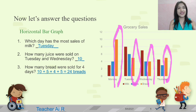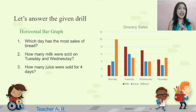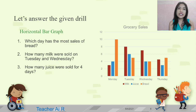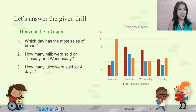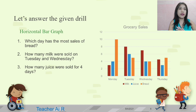Now you can get a piece of paper and try to answer this drill. The first question is: which day has the most sales of bread? Number two: how many milks were sold on Tuesday and Wednesday? And how many juices were sold for four days? It's almost the same as our example, only with different items. Remember, the milk is in maroon, the juice is in blue, and the bread is in orange.